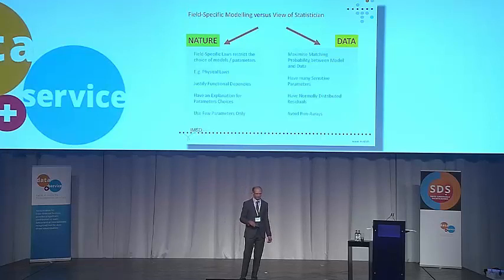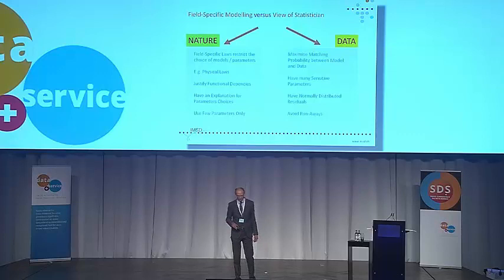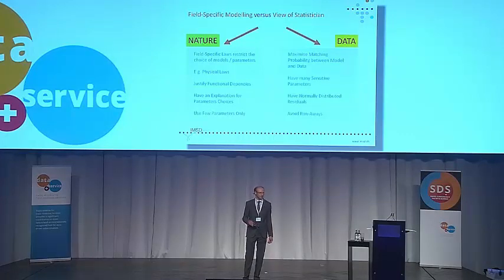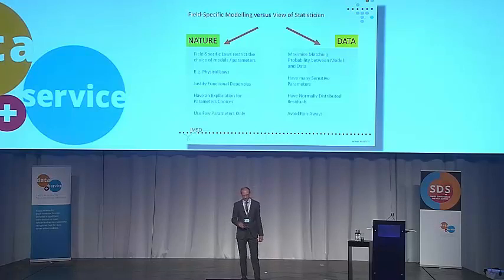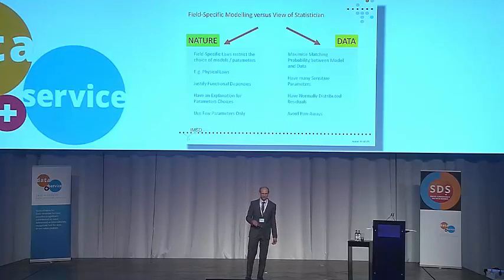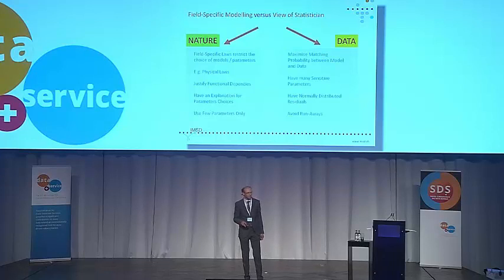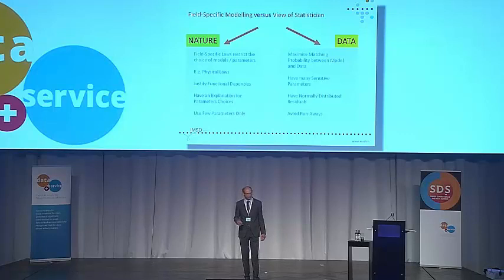The statistician wants to maximize the matching between the data and the models, have many sensitive parameters, and at the end the residuals should be normally distributed. What the statistician hates is having runaways. In contrast, you have nature — theory of physics and so on — which restricts what you are allowed to do. You must justify the dependencies in your models, explain your parameter choices, and use as few parameters as possible.